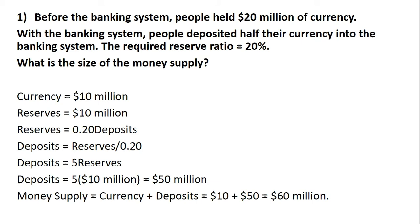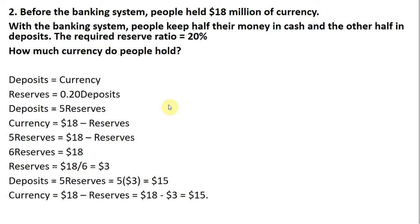Let's move on to problem two. Before the banking system, people held $18 million of currency. With the banking system, people keep half their money in cash and the other half in deposits. The required reserve ratio equals 20%. How much currency do people hold?